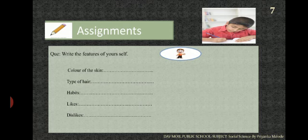Now it is time for a self-assignment. Students, you have to solve this question — it is very interesting. Write the features of yourself: your color of skin, your type of hair, your habits, likes, and dislikes. Write them down in your notebook.